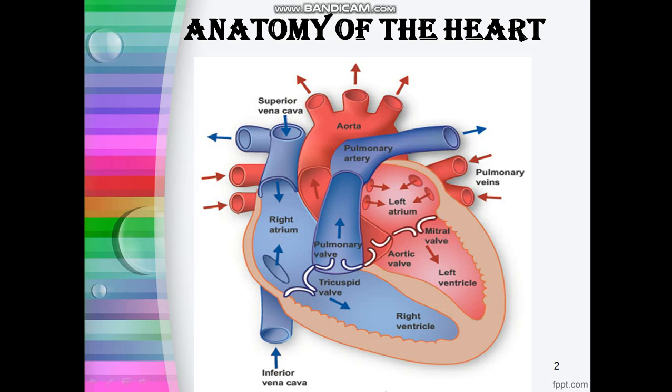If you compare the size of atria and ventricles, atria are smaller than ventricles and have thin, less muscular walls compared to ventricles. Also, the chambers on the right side of the heart are smaller when compared to those on the left side of the heart.